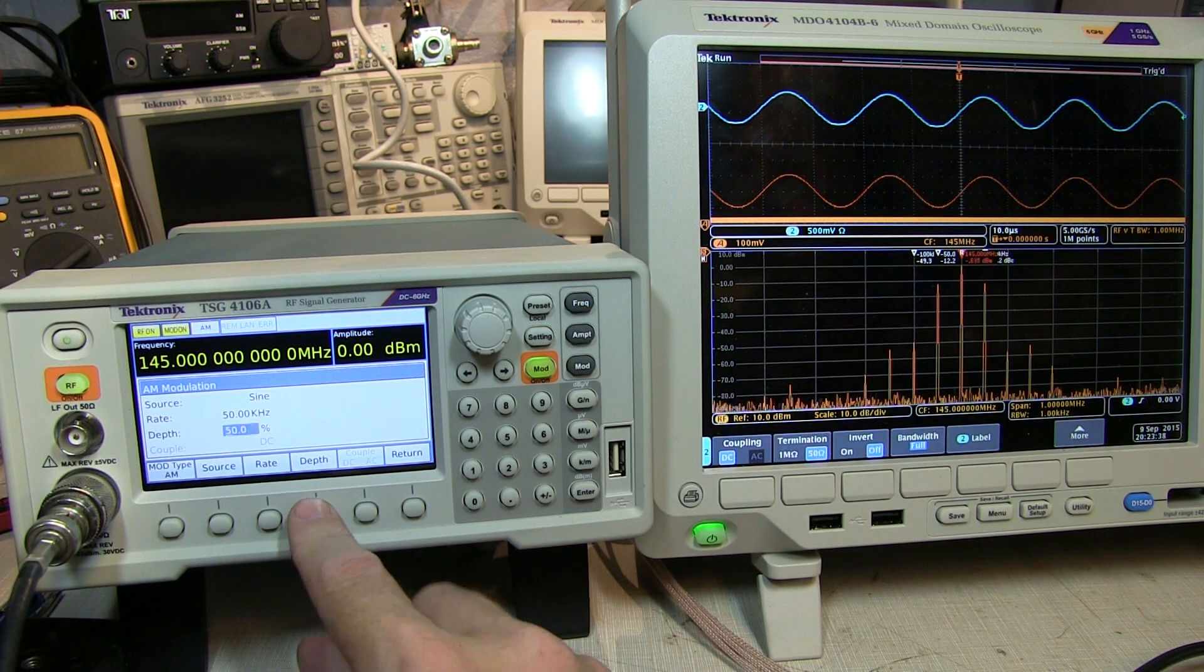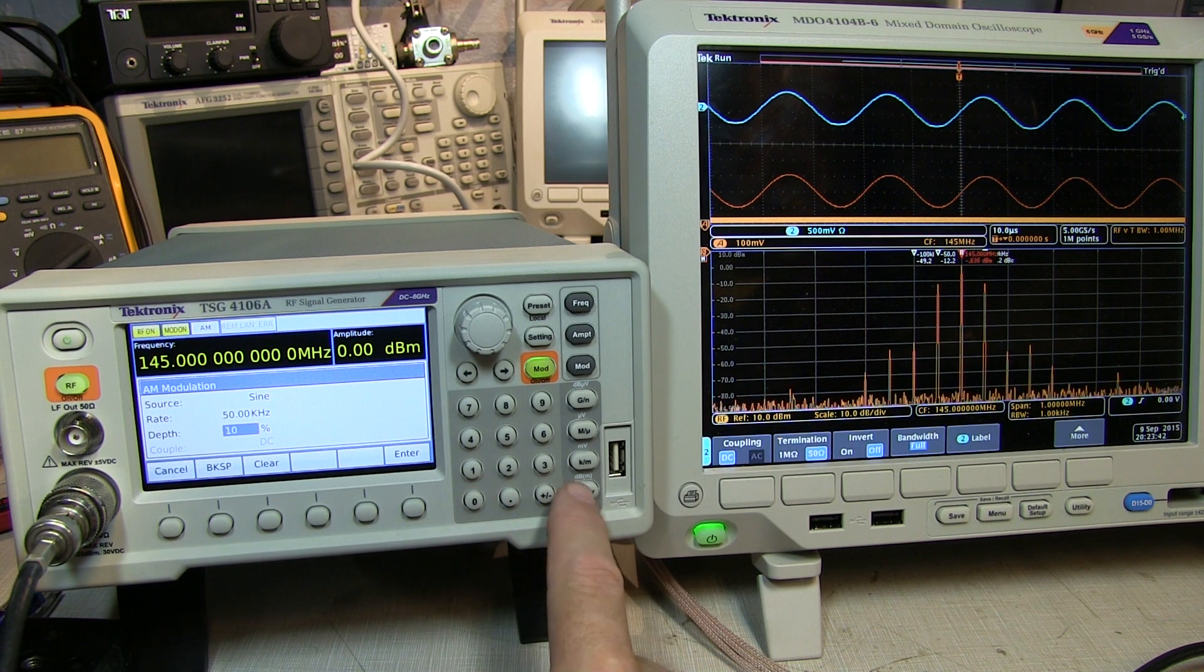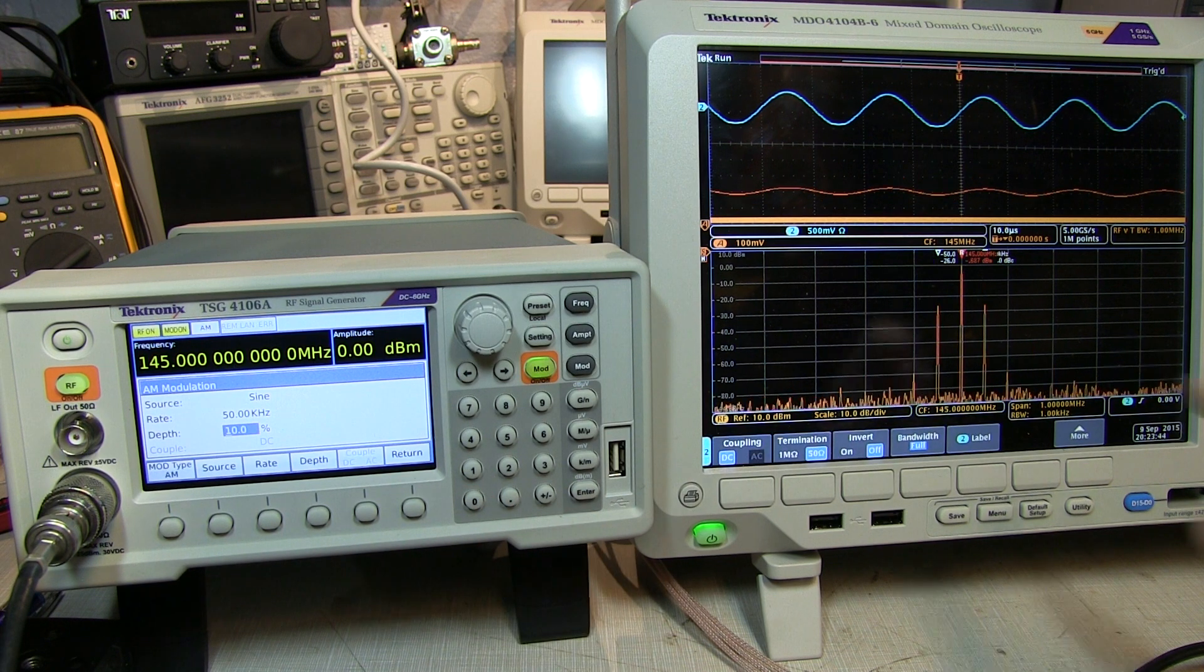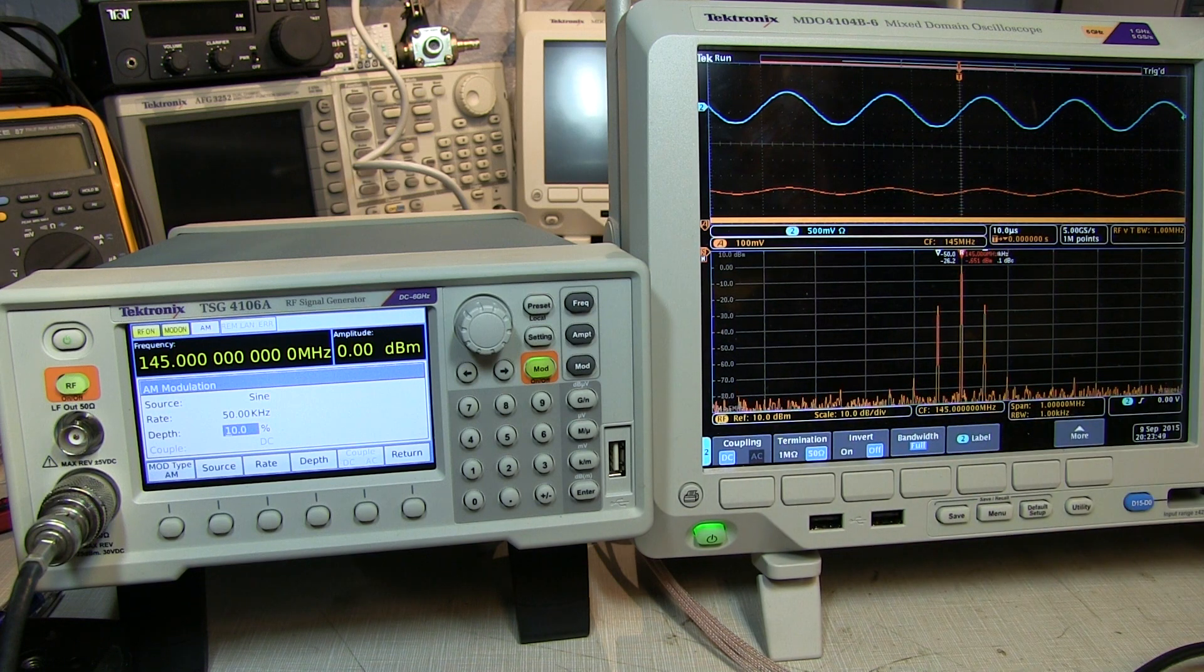Now, of course, if we change, say, the modulation depth from 50% down to something like 10%, we can see the amplitude variation has dropped down, and our sidebands have dropped down, as you would expect.